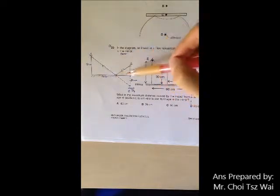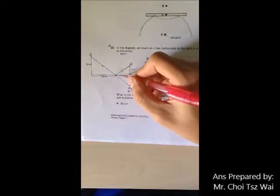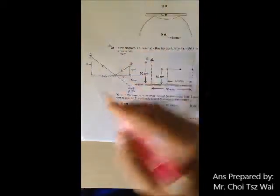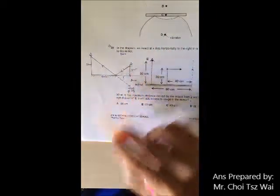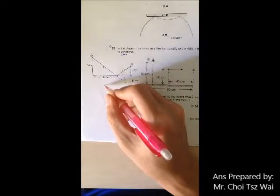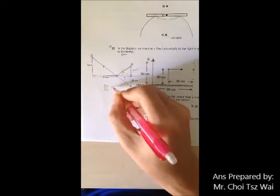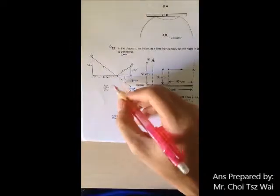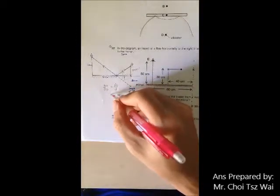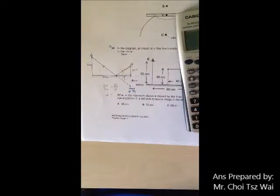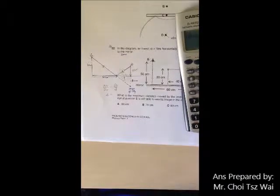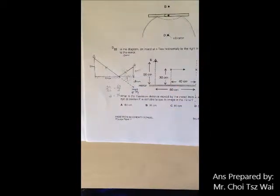So once you know this triangle and this triangle, you now need to find what is the distance from here to here. So with that, you know that 50 cm corresponds to 30 cm, right? So you can first form a ratio. Your 50 cm is to 30 cm must be equal to 60 cm is to your unknown here. So let's call this D.